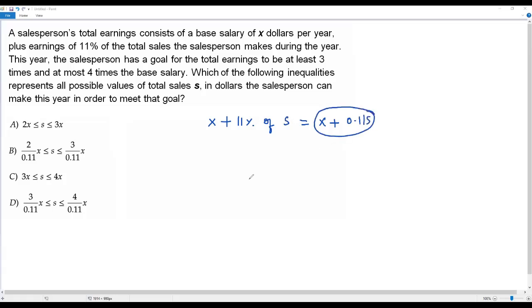So this expression represents the total earnings of the salesperson. The minimum value of the total earnings has to be at least three times the base salary. The base salary is X dollars, so three times the base salary is 3X. Four times the base salary is 4X.